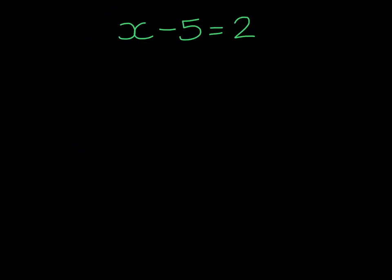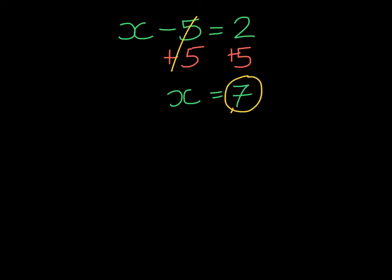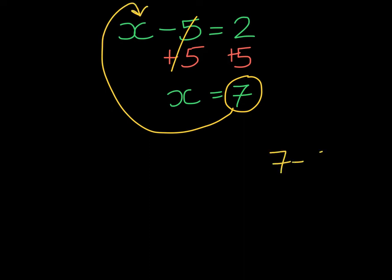Now we're going to do some examples together. If you want, you can pause the video and think about what inverse operations you would do to either side. In this case, we see we are subtracting 5 from X, so we're going to add 5 — that's the inverse — to both sides. On the left-hand side, if I subtract 5 only to add 5, that's going to cancel. I'm left with X on the left-hand side, and on the right-hand side, 2 and 5 gives me 7. At this point, if I take 7, I can substitute it into the original equation to check, and 7 take away 5 gives me 2. So we've solved it correctly.